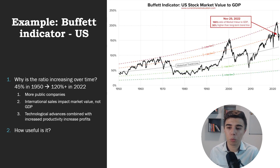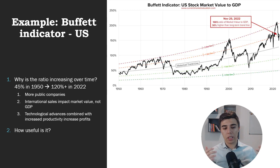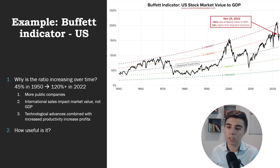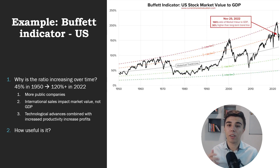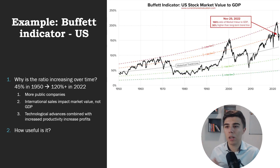The third argument is technological advances combined with increased productivity leading to increased profits. Hypothetically, imagine a company that manufactures chairs. In the beginning, there is a ratio between the market price and the products manufactured. But over time, if the company figures out how to manufacture chairs more efficiently with higher profit margins, the output — the chairs — would still be the same, but there would be a lot more profit left for the company. Through valuation, the market cap would go up, and therefore this ratio would also increase. So there is a natural tendency for this ratio to increase over time.